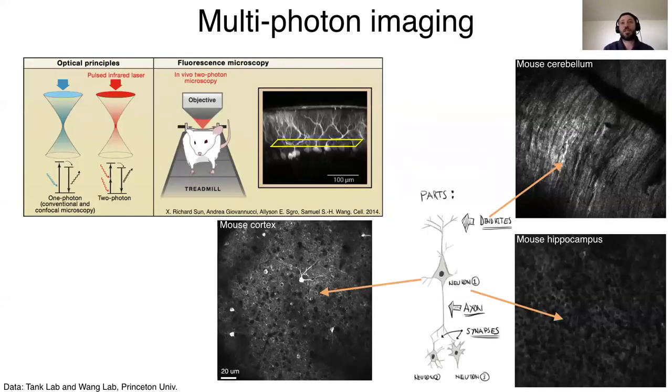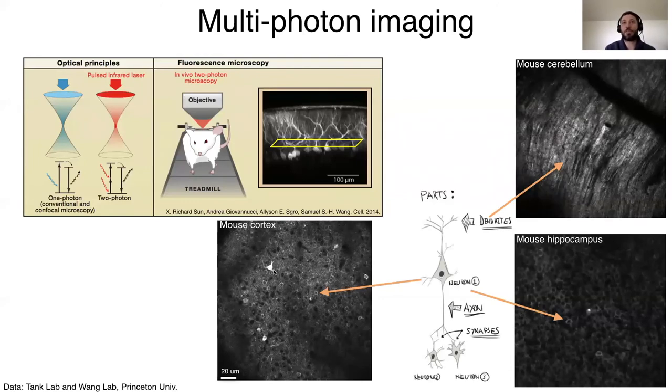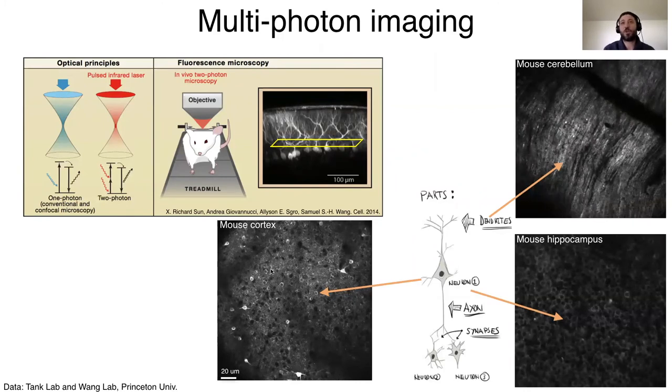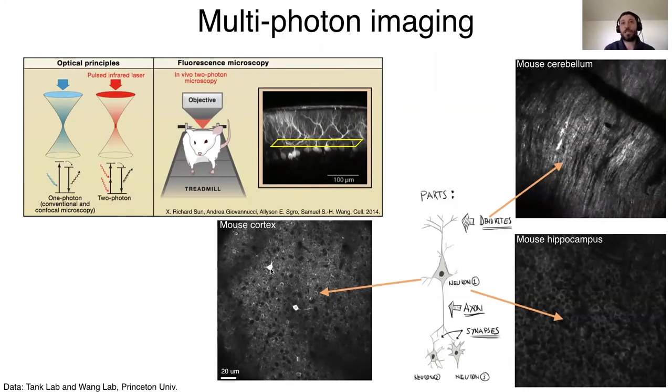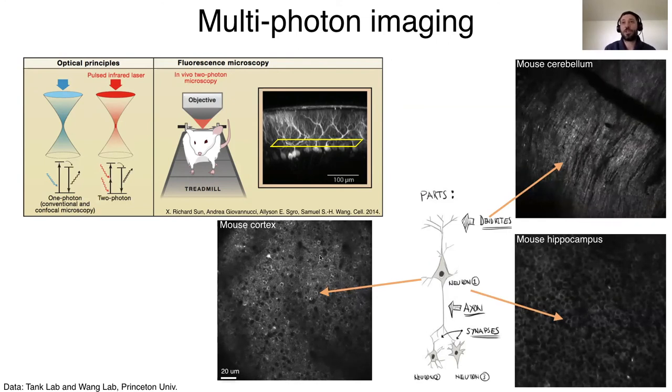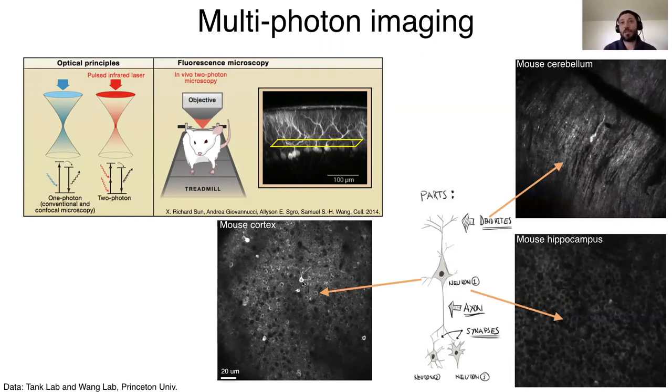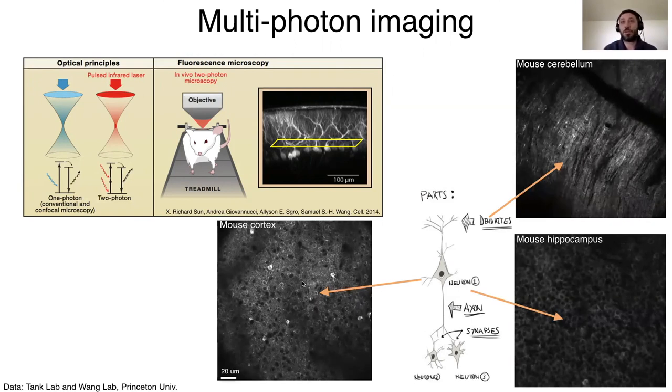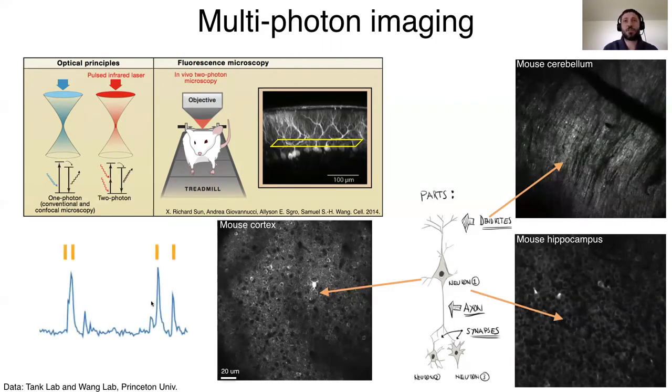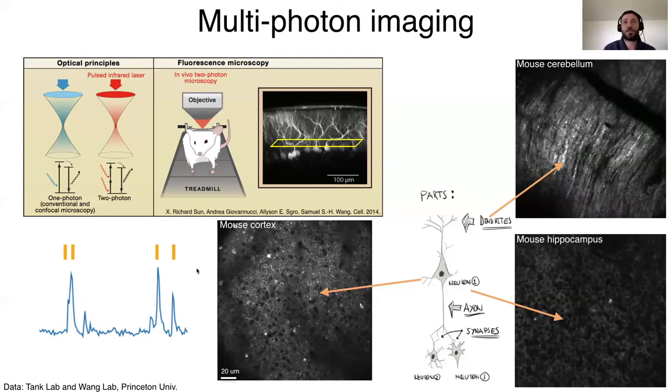So as I mentioned on Tuesday, we have calcium imaging. The basic idea is that you can express a protein in cells that is fluorescent. And the fluorescence of this protein depends on how active a neuron is. When you see one of these rings becoming active, that means becoming bright, that means that the neuron becomes active.